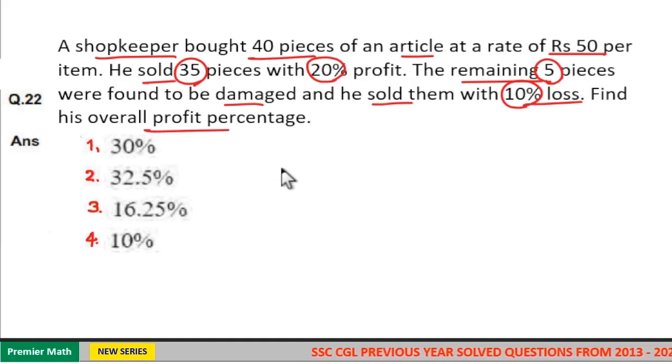Here out of this 40 pieces, 35 pieces he sold at 20 percentage profit and remaining 5 pieces he sold at 10 percentage loss.